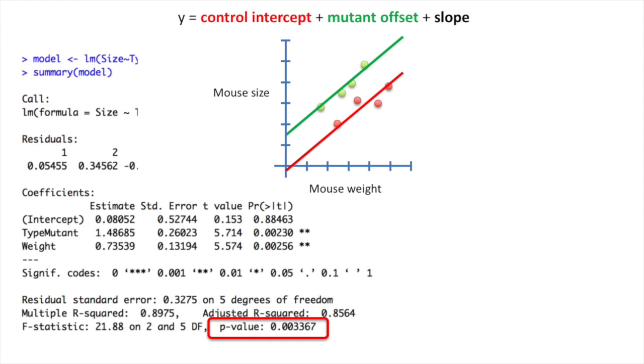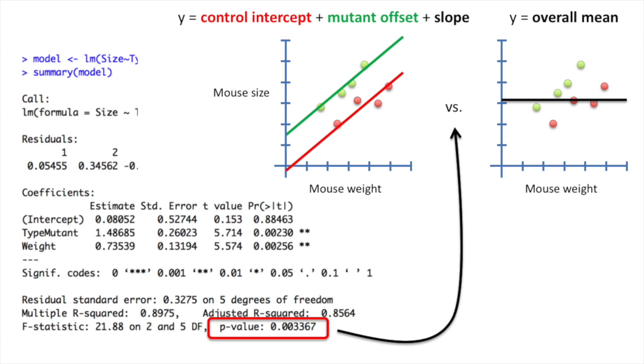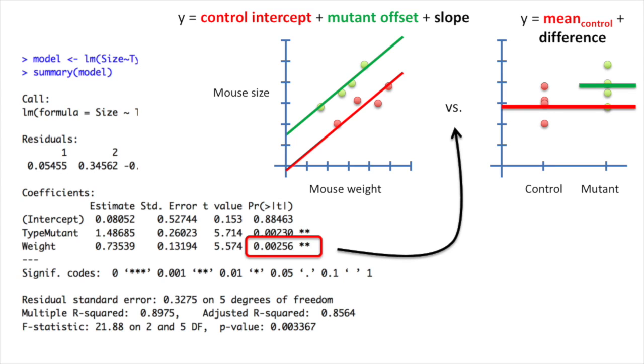Lastly, we have a p-value. This p-value compares the fit of our fancy equation to the simplest equation possible, y equals the overall mean. This p-value for the weight parameter tells you how much better the fancy equation fits the data than if we had removed the weight parameter. This amounts to comparing the fit of the fancy equation to just a normal t-test.